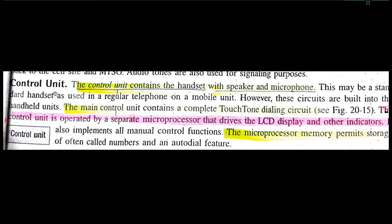The last point is the control unit. The control unit basically contains a handset with a speaker and microphone. The handset is used in regular telephone or mobile units, and this circuit is built into the handset unit. The main control contains the complete touch-tone digital circuit as well as the LCD control. There is a touch-tone dialing circuit with a 14-pin dialing pad, LCD control, and indicators — everything is managed by the handset device.